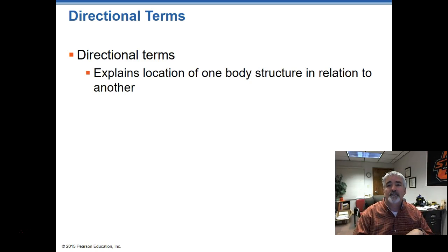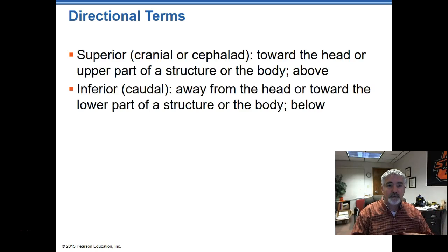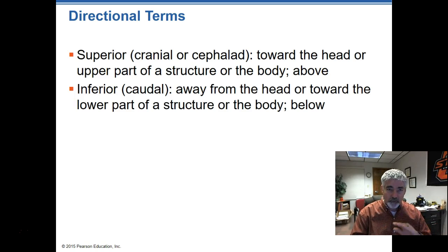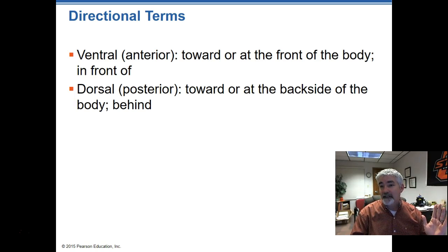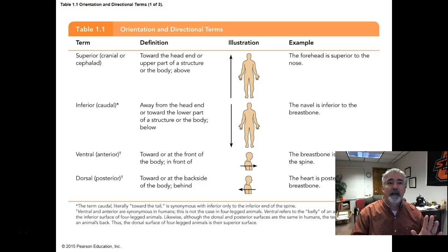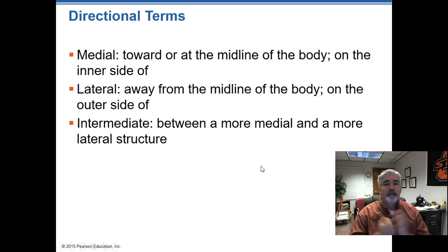Directional terms explain the location of one body structure in relation to another. If I say my elbow is distal to my shoulder, it means my elbow is below my shoulder. Superior — sometimes cranial or cephalad — is towards the head or upper part of the body. Inferior is toward the bottom, away from the head. Ventral is the front, dorsal is the back. The easiest way to remember that is the fin on a shark — it's called a dorsal fin and it's on their back. Medial is towards the midline, lateral is away from the middle, and intermediate is between a more medial and lateral structure.